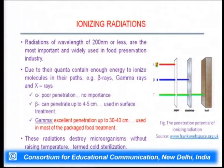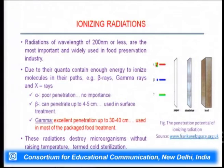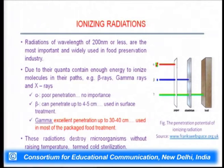Ionizing radiations have a wavelength of 200 nanometers or less and are the most important and widely used in the food industry because their quanta contain high enough energy to ionize molecules in their path. Examples are alpha, beta, gamma, and x-rays. Alpha radiations have poor penetration and no importance for preservation. Beta radiations can penetrate up to 4–5 centimeters and are used in surface treatment. Gamma radiations have excellent penetration of 30–40 centimeters and are mostly used in food packaging industries. These radiations can destroy microorganisms without raising the temperature of food, which is why the process is termed cold sterilization.